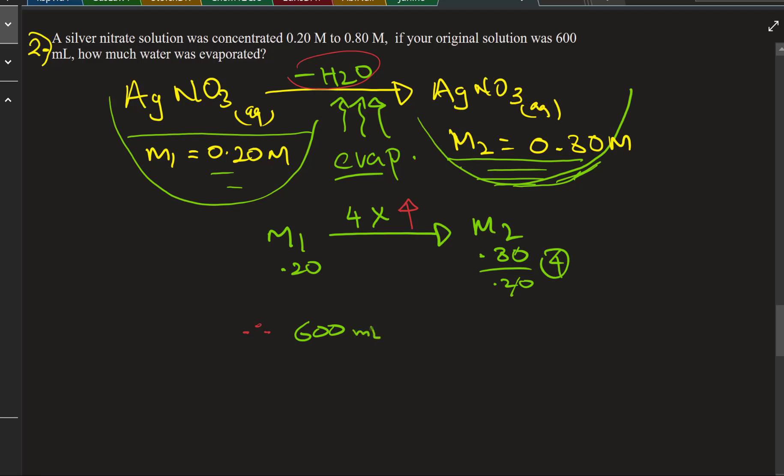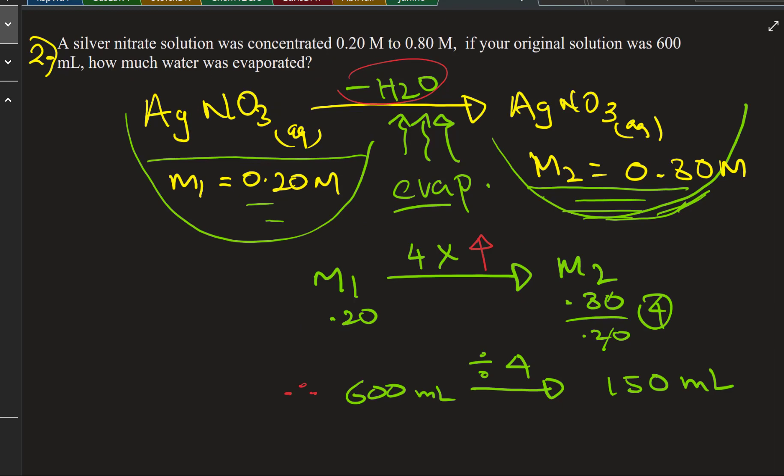Divided by 4. 600 milliliters divided by 4 would be 150 milliliters. Now you have the initial milliliters and the final milliliters. We want to know how much water disappeared.